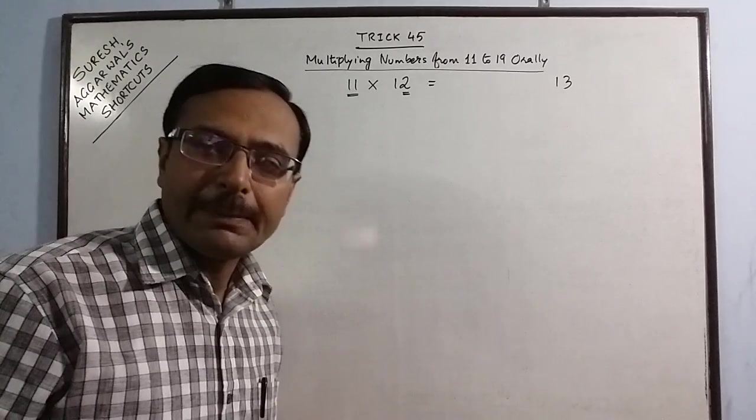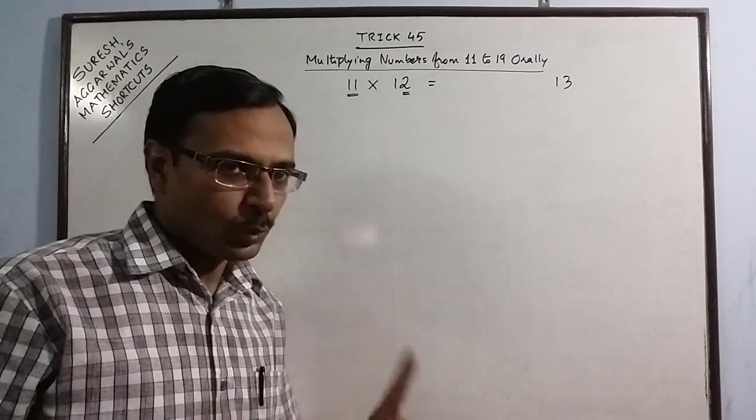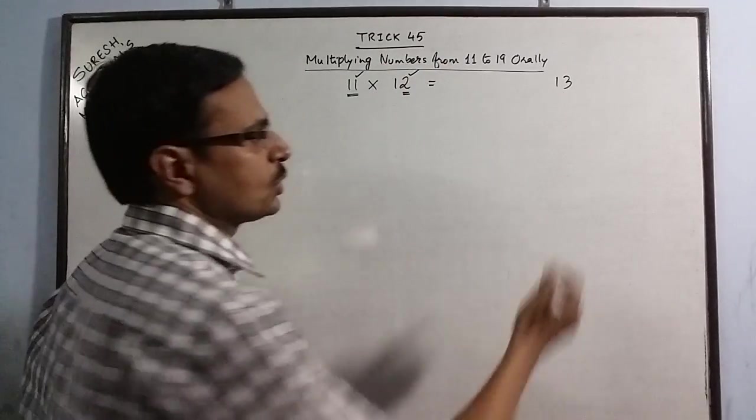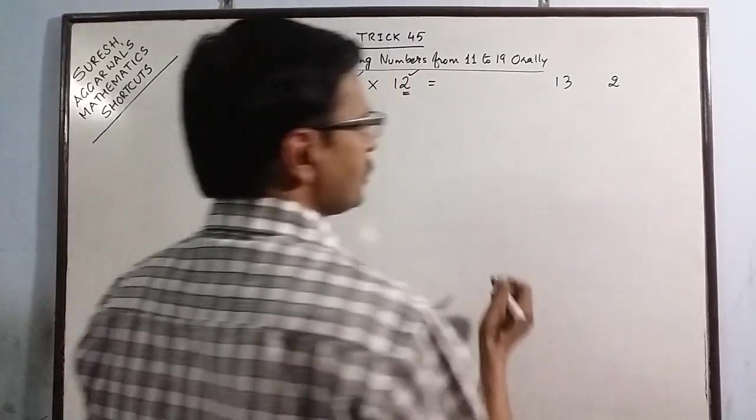Now, the second step is to multiply the units places of the two numbers. Here it is 1 and here it is 2. 1 into 2 is 2.